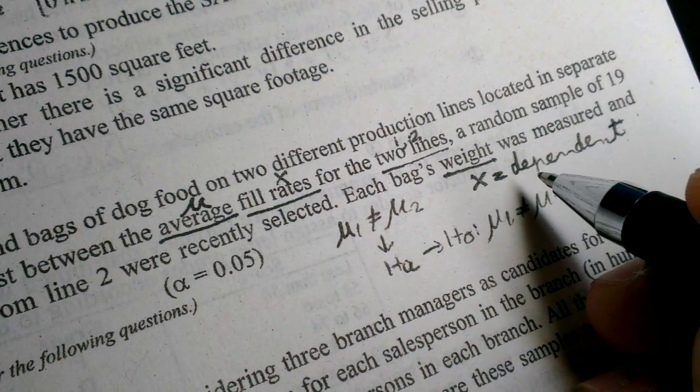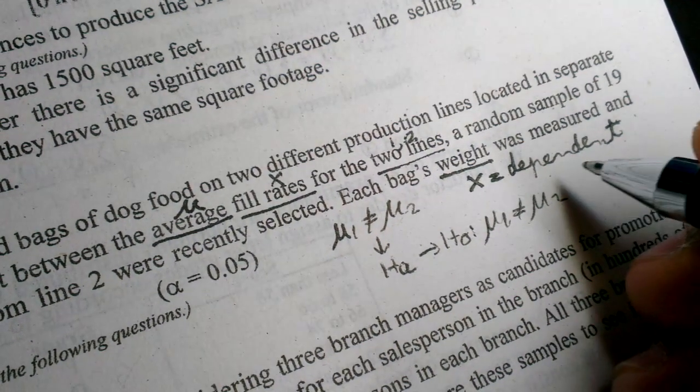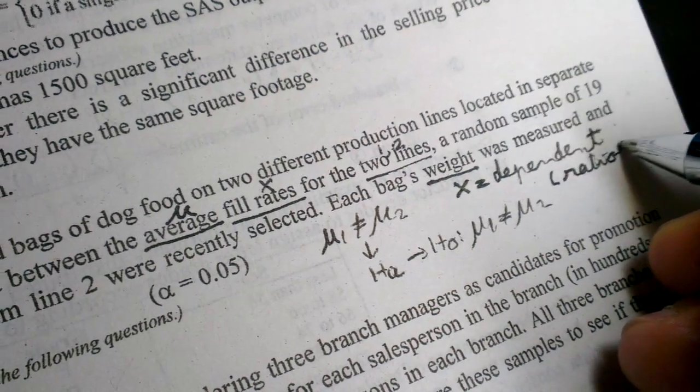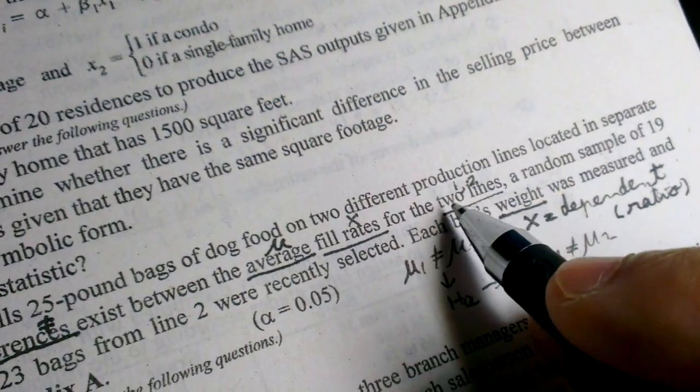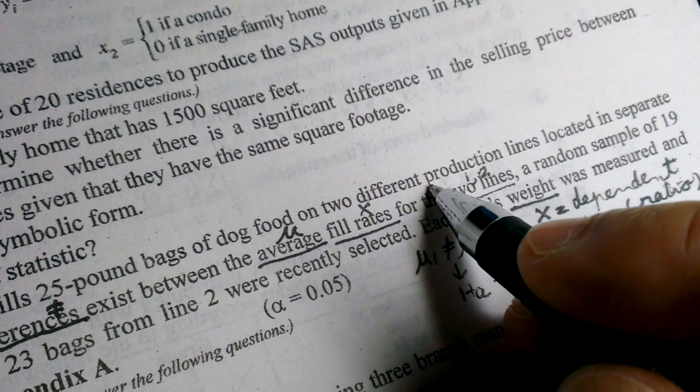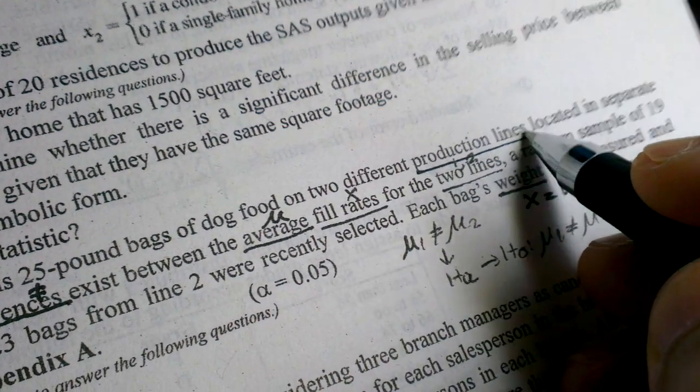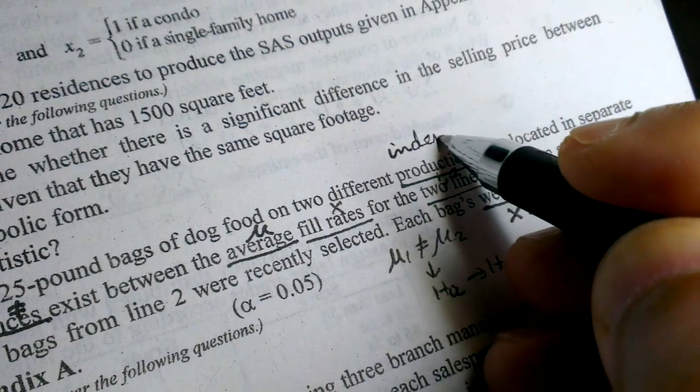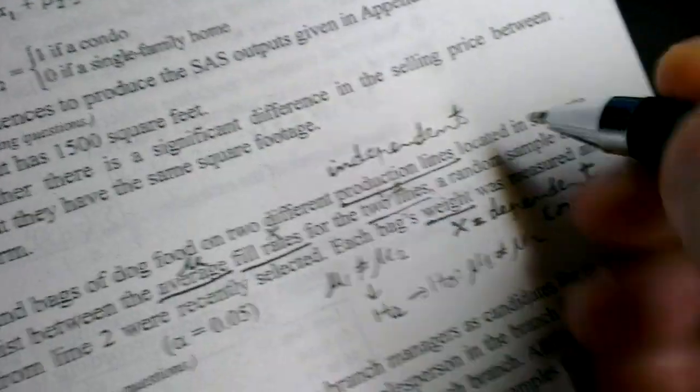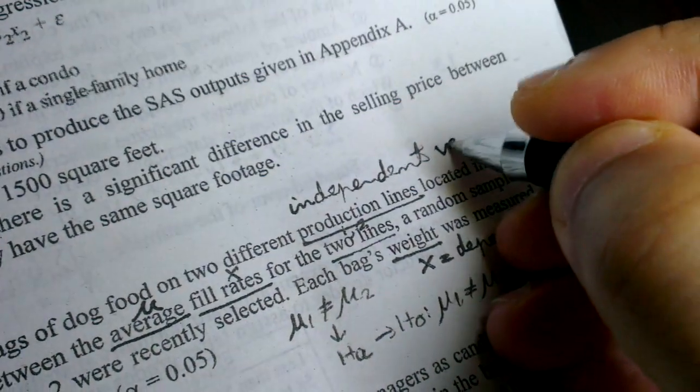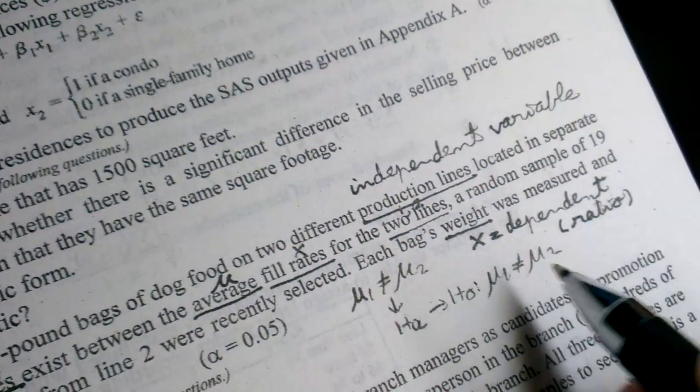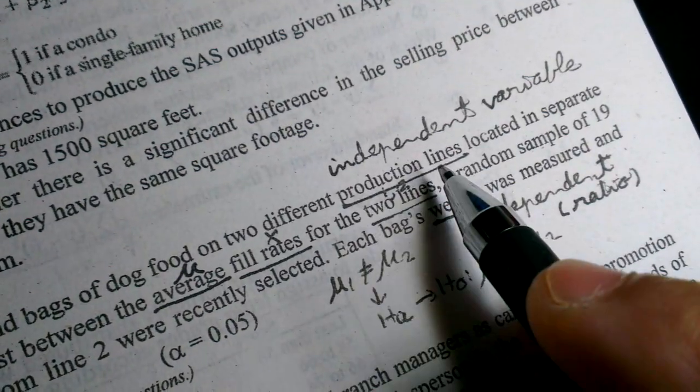Weight is measured at ratio level. And two lines, therefore production line. This is another variable, independent variable.